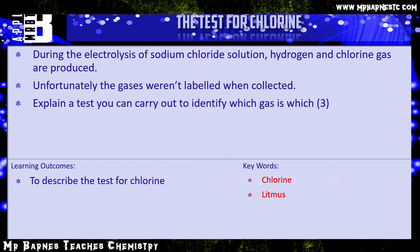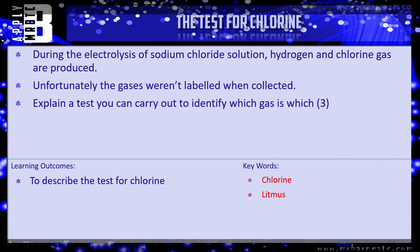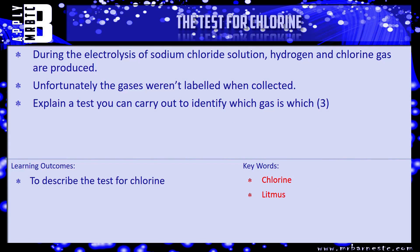I've got one question for you on this. During the electrolysis of sodium chloride solution, hydrogen and chlorine gas are produced. Unfortunately the gases weren't labelled when collected. So explain a test you can carry out to identify which gas is which.